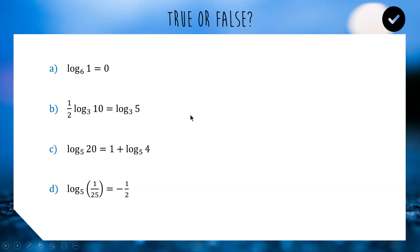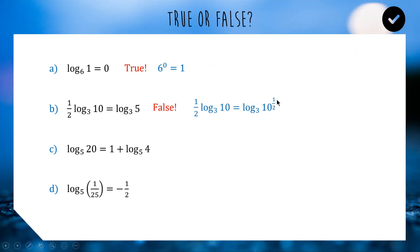Question a: log base 6 of 1 equals 0. Is 6 to the power of 0 equal to 1? Yes — so that is true, one of our properties from the first slide. Question b: a half of log base 3 of 10 equals log base 3 of 5. Five is half of 10, so it seems to make sense — but it's false. The half moves up to become the power of 10, giving log base 3 of 10 to the half, which is the square root of 10, approximately 3-point-something, not 5. The half square-roots the subject rather than halving it.